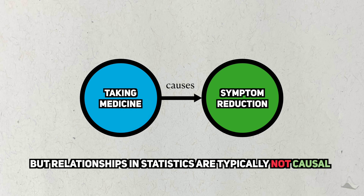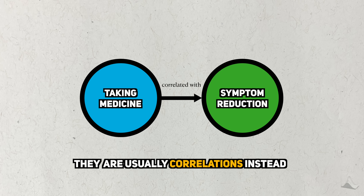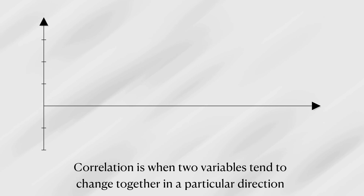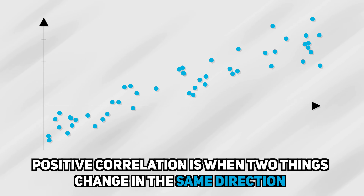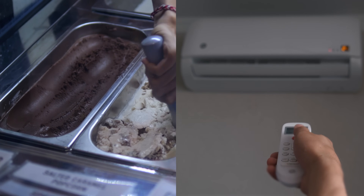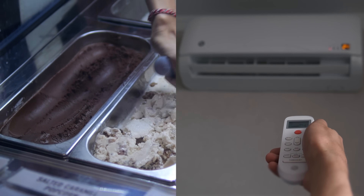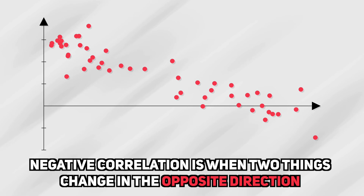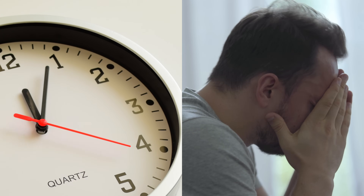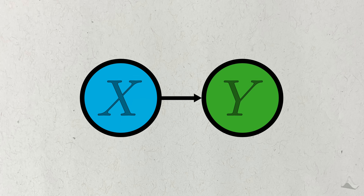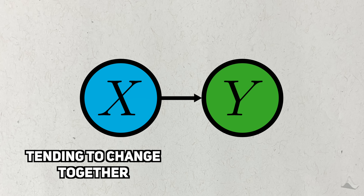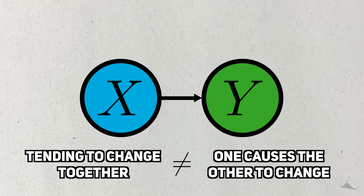In statistics, when we talk about relationships, we're most likely referring to correlations. Correlations are when two random things tend to change together in a particular direction. Positive correlation is when two things tend to change in the same direction — think of ice cream consumption and your aircon usage. And there's also negative correlation, where things change in opposite directions — think of time in a PhD program and your general well-being. But most people would recognize that just because two things tend to change together doesn't mean that one is causing the other to change.